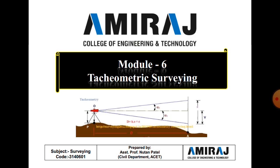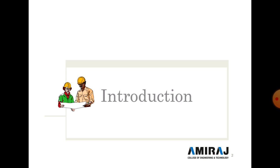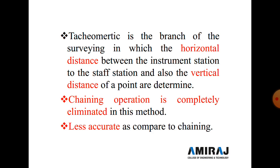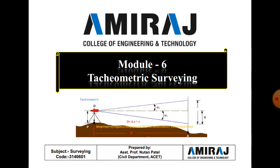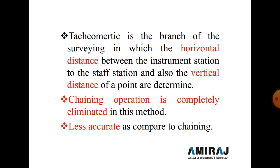Hello students, today we start a new module — Module 6: Tacheometric Surveying. Tacheometry is the branch of surveying in which the horizontal distance between the instrument station and staff station, and also the vertical distance of points, are determined. As seen in the figure on your first slide, we find out the horizontal distance D and also the vertical distance of any object.